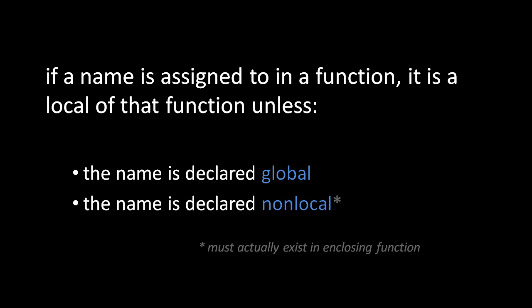A subtle but important rule: when you declare something nonlocal, there must actually be a variable of that name in an enclosing function. If there is no such variable, Python considers that an error and will throw an exception. This is only the case with nonlocal. If you declare a global variable in a function which doesn't actually exist in the module, that's fine — when you assign to that name it will create the module variable if it doesn't yet exist. This makes sense because names assigned in modules are attributes added to the module object, but it makes no sense for nonlocal, because you can't add a new local variable to some enclosing function. That's why Python has this double standard.